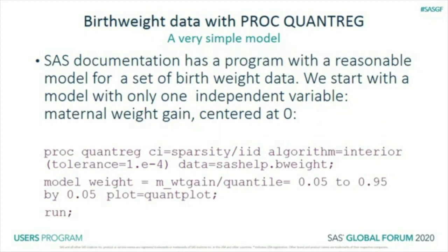There's a dataset in SAS called BWEIGHT with a reasonably full set of variables. I'm going to start with a very simple model with only one variable — MWEIGHT_GAIN (maternal weight gain, centered on the mean). We have quantiles from 0.05 to 0.95 by 0.05, and we're going to have a quantile plot.